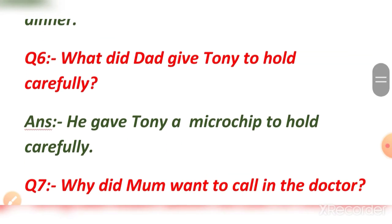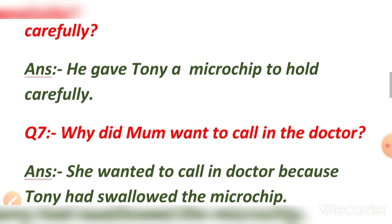Question number 6: What did dad give Tony to hold carefully? The answer is dad gave Tony a microchip to hold carefully.